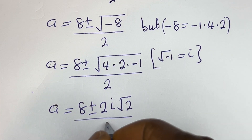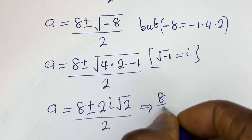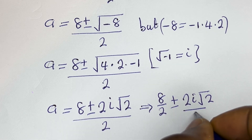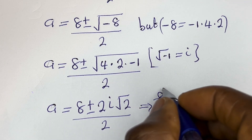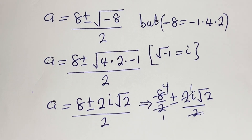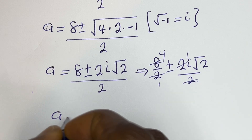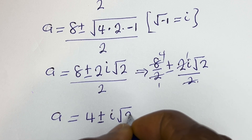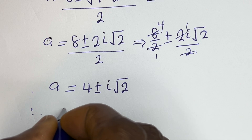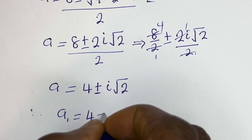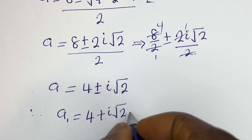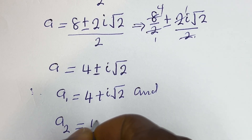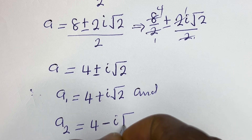This simplifies to 8 over 2, plus or minus 2i times square root of 2, divided by 2. Therefore, a₁ equals 4 plus i times square root of 2, and a₂ equals 4 minus i times square root of 2.